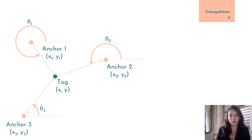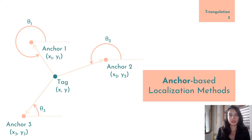There are also other ways to locate a tag using anchors, for instance, based on the angle of arrival of a signal. What these methods have in common that's relevant for our work is that they use the locations of anchors in the localization algorithm. So that's what we understand by anchor-based localization methods.